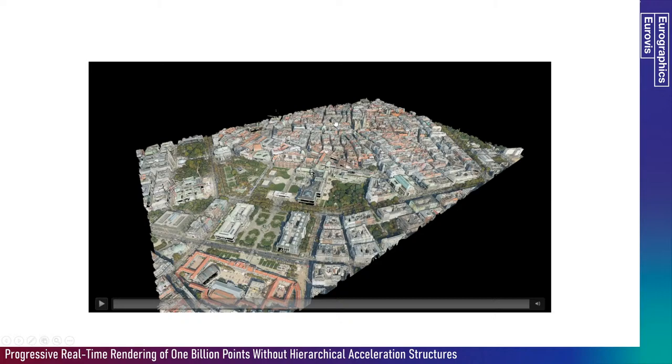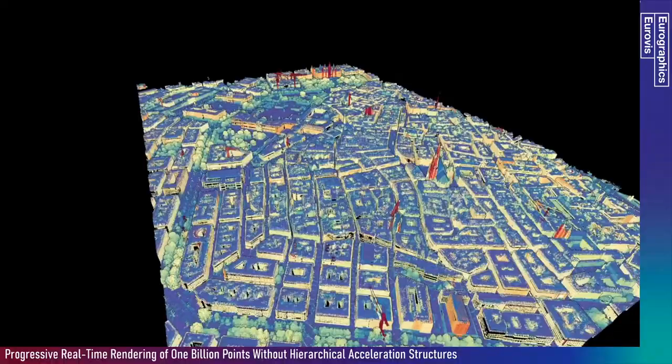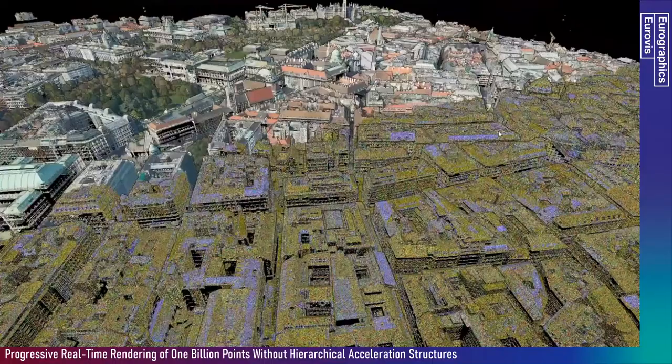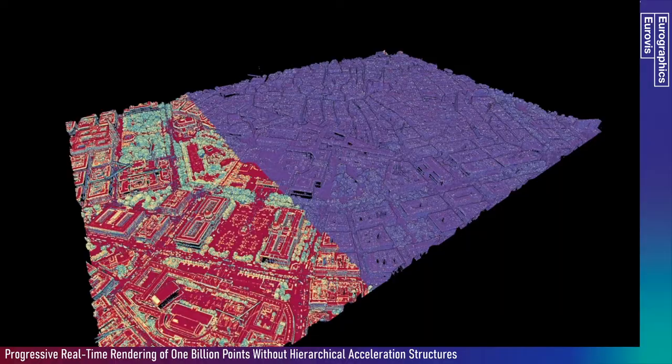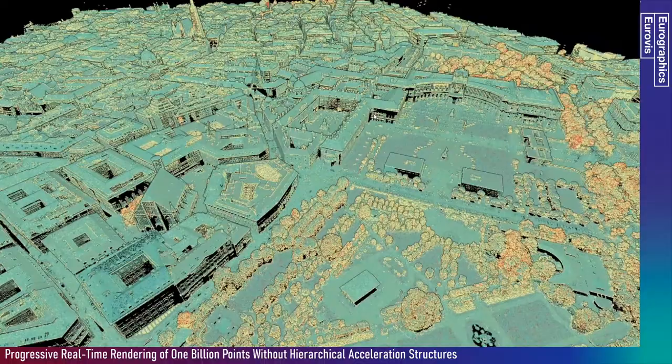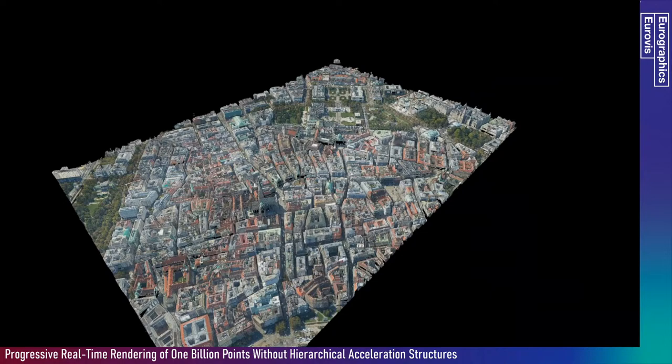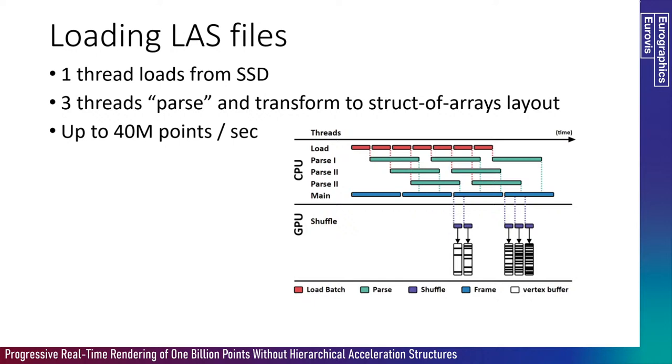When switching attributes, it's not instant — it takes a couple of frames to finish. But considering this is done only when a user requests a different attribute, this is usually fine. Of course, you won't be able to do shading that requires combining many attributes, but as long as you just need a limited amount of attributes, this works quite well.